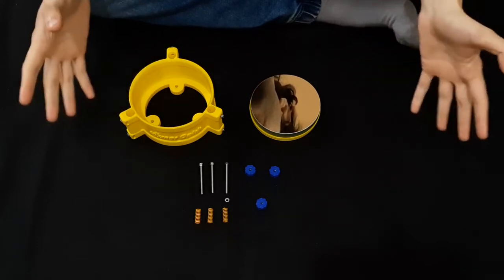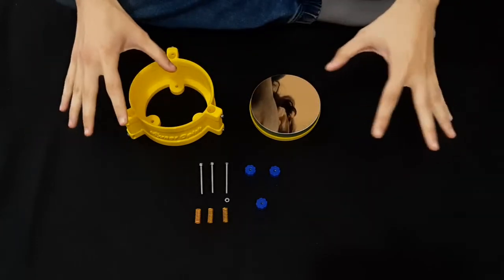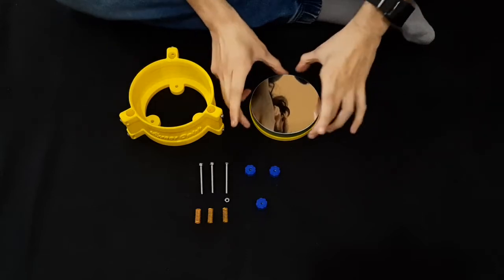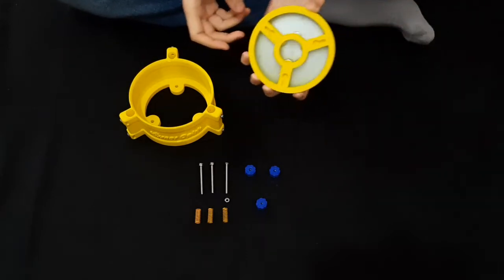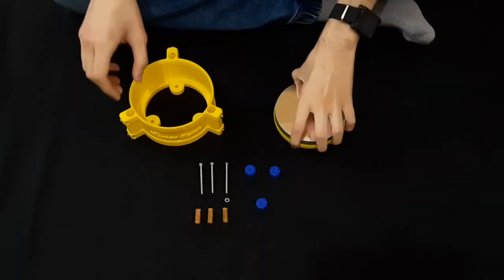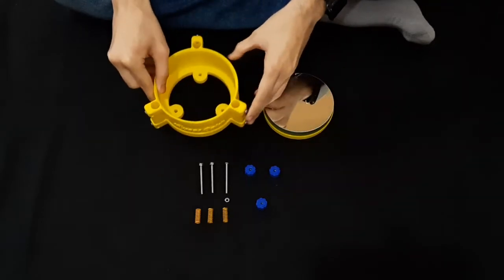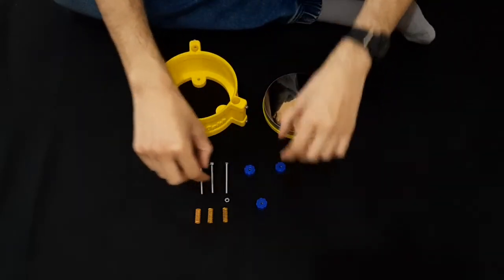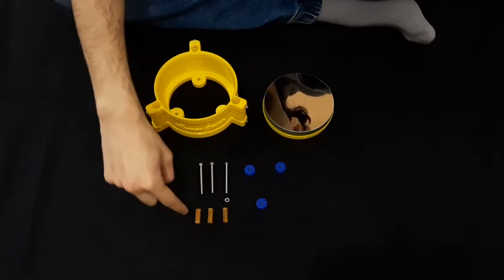All right, to start with we want to make sure we have everything ready and accessible. We have the mirror; it is already glued into the cell. We have the lower tube assembly, three knobs, three screws, and three springs.